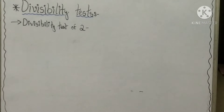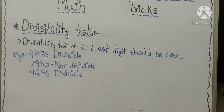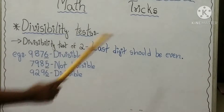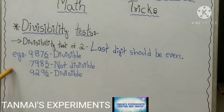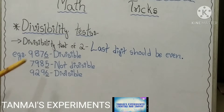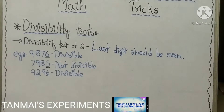First, let's see the divisibility test of 2. The divisibility test of 2 is that the last digit should be even. For example, in 9,876, the digit 6 is the last digit and 6 is divisible by 2 because it is an even number. 7,985 is not divisible by 2 because 5 is an odd number.